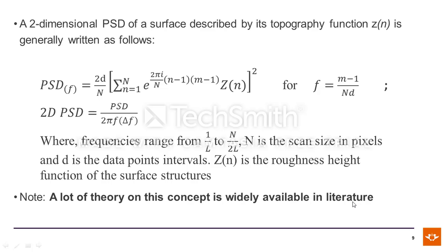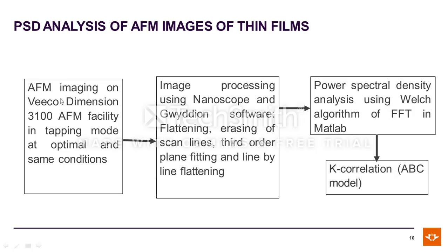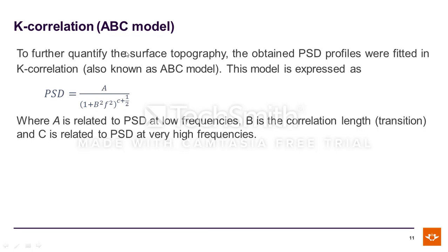When doing PSD analysis, in this work we obtained AFM images using a V-code instrument at 100 FM facility in tapping mode at optimal conditions. We then subjected the images to image processing using Nanoscope and Gwyddion software. Nanoscope comes with the AFM facility as a subscription, but Gwyddion software is open source and free of charge online. After several image processing steps, you can perform power spectral density using the Welch algorithm of fast Fourier transform in MATLAB code. From there you interpret the profiles obtained from MATLAB using the k-correlation model, power law, or whichever mathematical model you are familiar with.